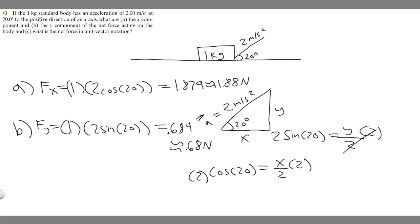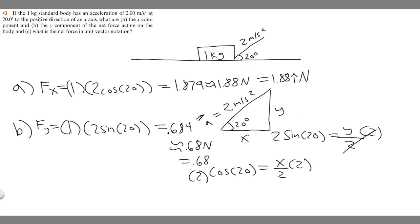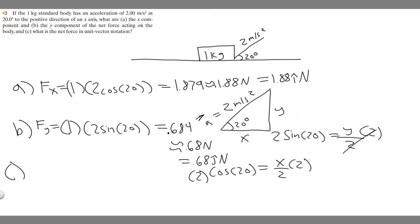They don't specifically ask for vector notation for parts A and B, but you could write the x-component as 1.88i and the y-component as 0.68j — where i means in the x-direction and j means in the y-direction. So 1.88 and 0.68 are your answers to A and B. For part C, in unit vector notation you just combine them: it's going to be 1.88i plus 0.68j newtons.